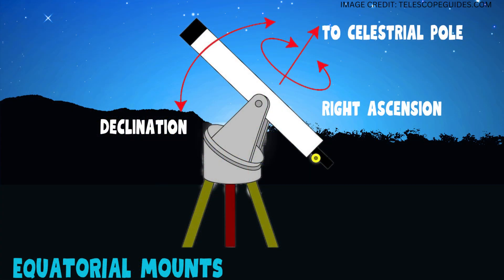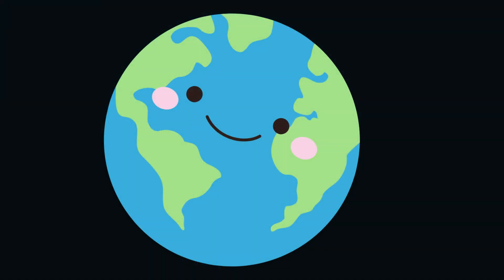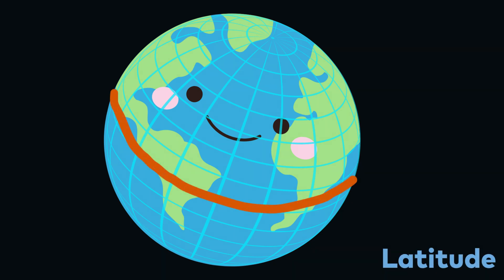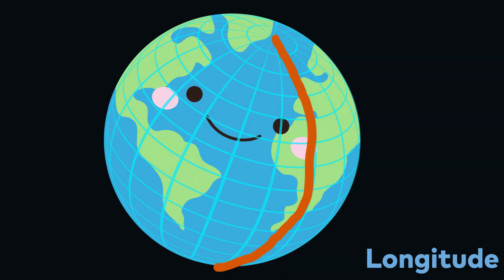Let's talk about another coordinate system used by astronomers in equatorial mounts. Starting with what we use on earth: latitude and longitude. Latitude measures the distance north or south of the equator, expressed in degrees. Zero degrees latitude equals the equator, 90 degrees north equals the true north pole, and 90 degrees south equals the true south pole — the poles are where the earth spins on its axis. Longitude measures distance east or west from the prime meridian, an imaginary line from Greenwich, England, dividing the earth into two hemispheres. It is measured in degrees, minutes, and seconds.